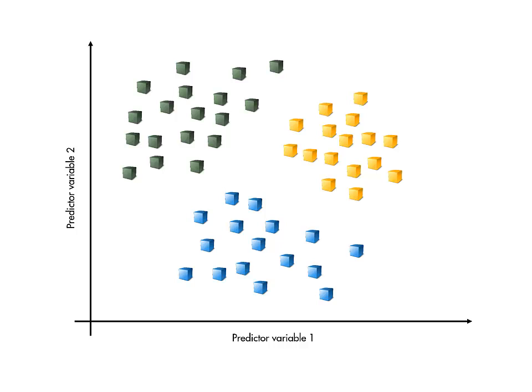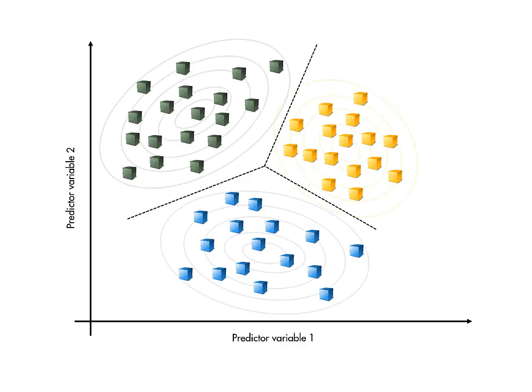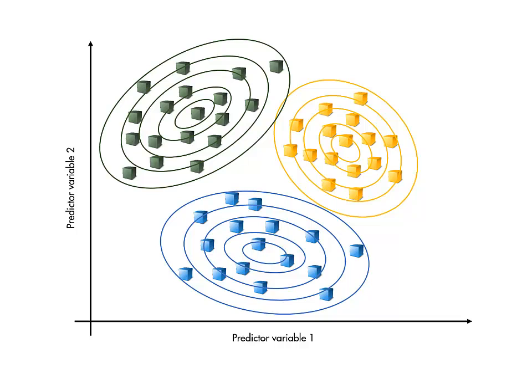Discriminant analysis uses the training observations to determine the location of a boundary between the response classes. The location of the boundary is determined by treating the observations of each class as samples from a multidimensional normal distribution.